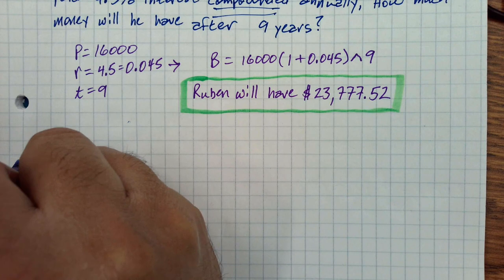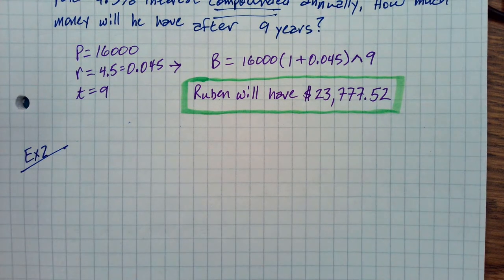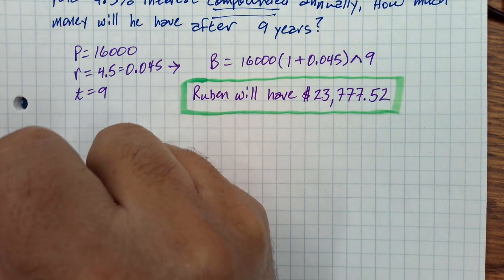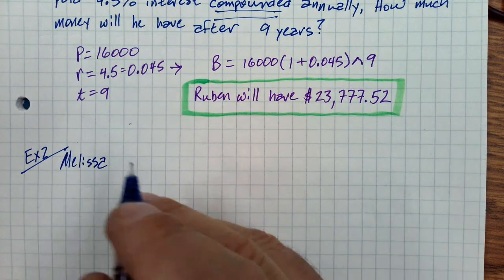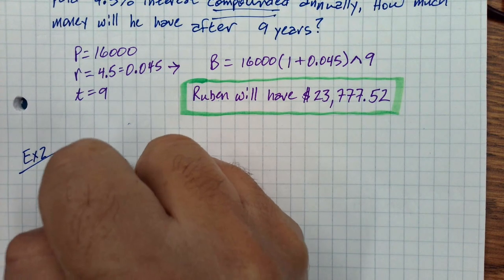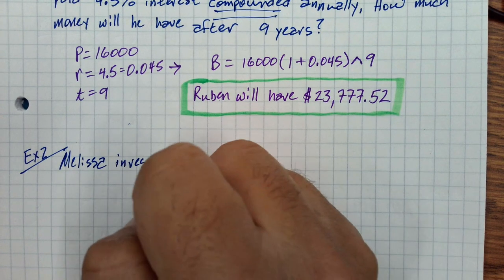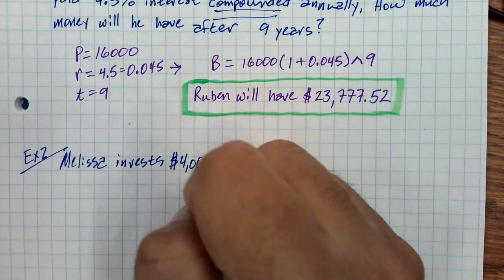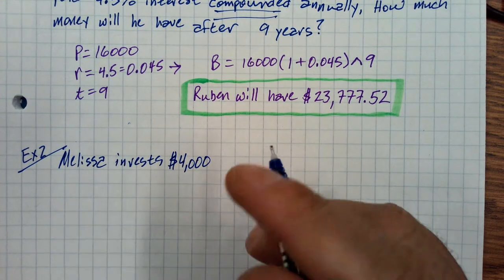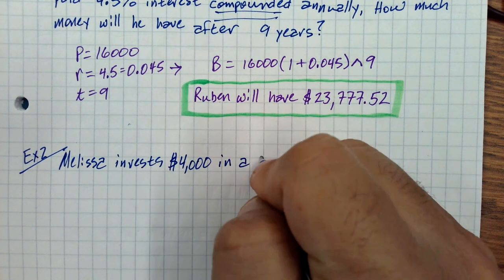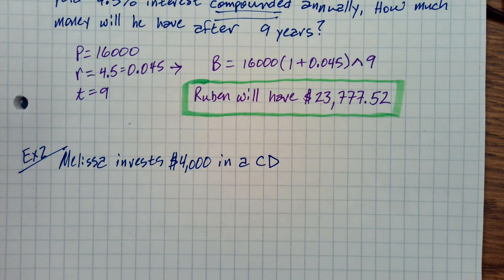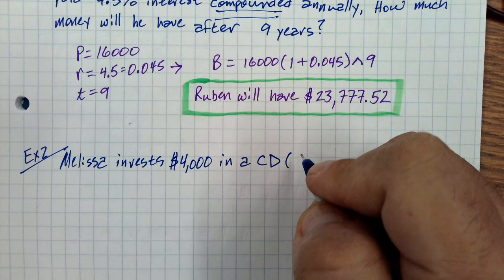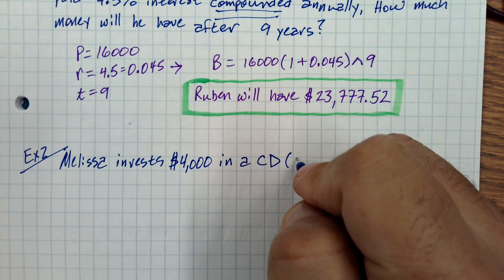Number two. So Melissa invests, let's say she has $4,000 and she's going to invest it in a CD. Do you guys know what a CD is? That's what we all know is a CD. You ask most everyone, what's a CD? They'll say one of those round silver thingies, you play music or whatever. In this case, this is a certificate of deposit.